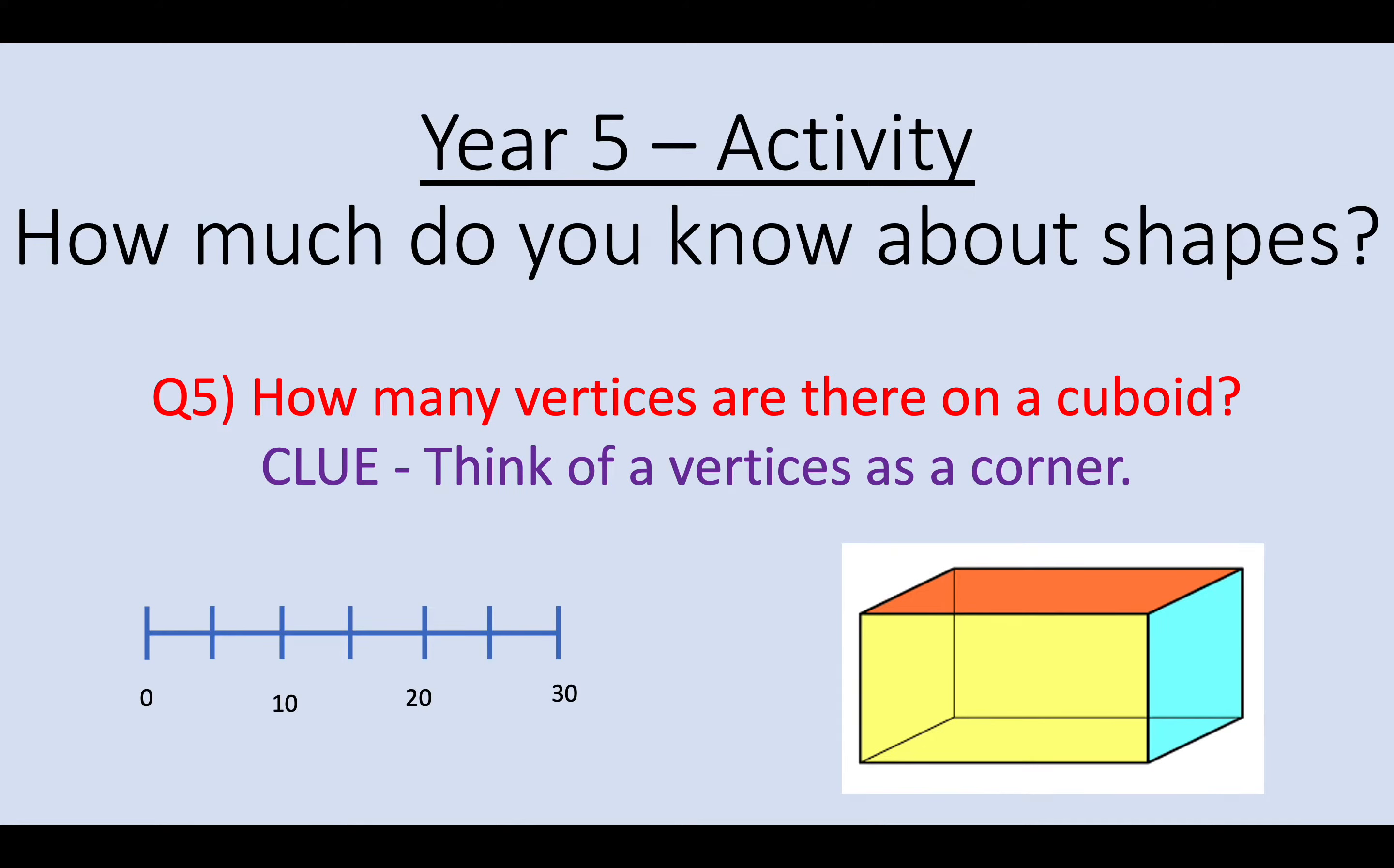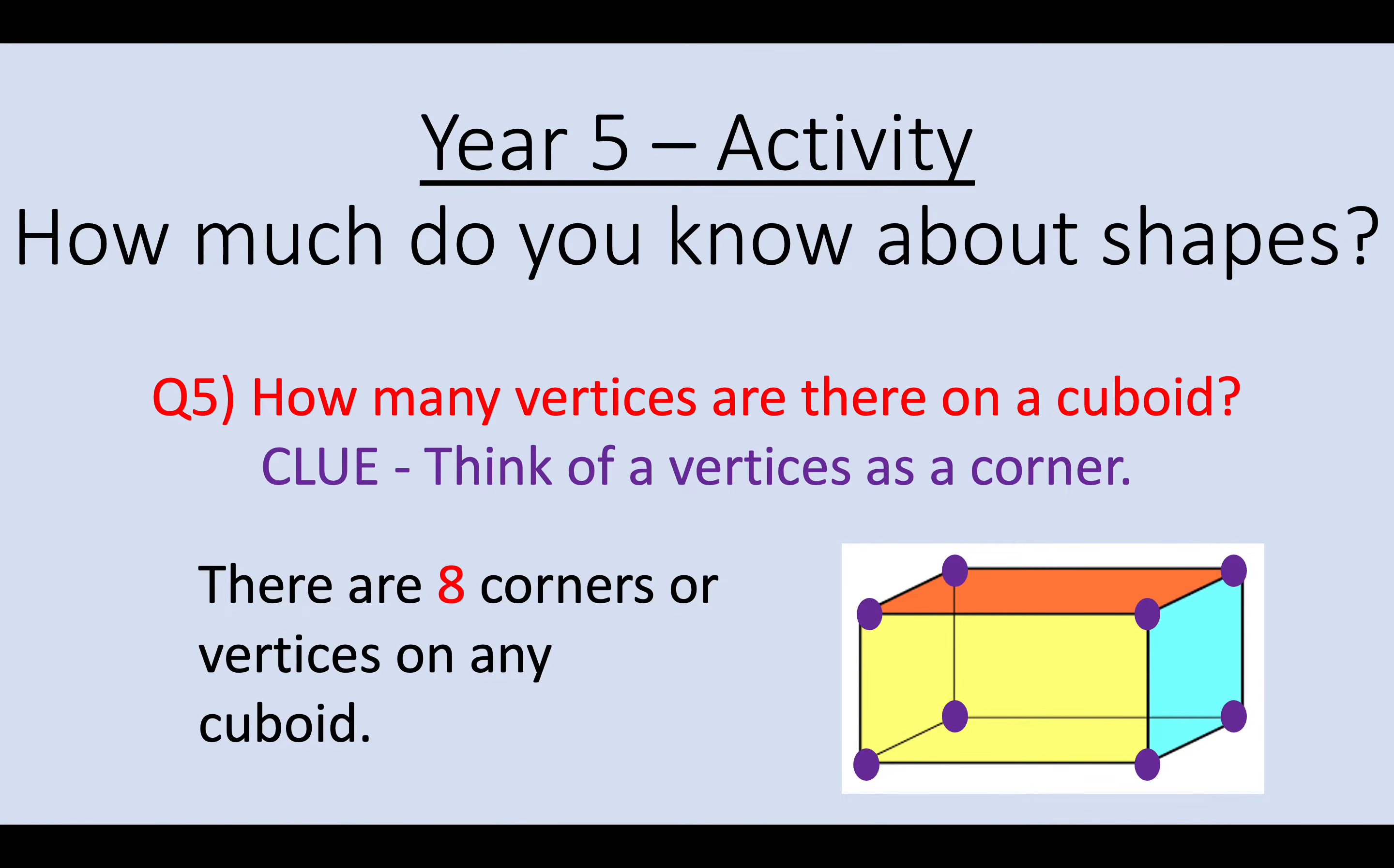Question 5. How many vertices are there on a cuboid? Okay. So a vertices is just a corner piece. So if I was to make this cuboid I would need 8 corner pieces as the purple dots show. So your answer to question 5 was 8.